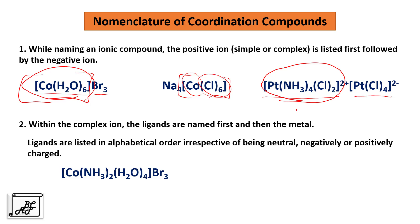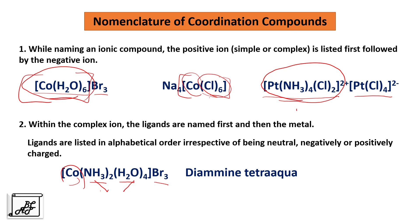For example, in this case cobalt is the central metal atom. Then we have amine as a ligand, then a water molecule — called aqua in the IUPAC naming system — and then bromide ion outside the square bracket as a negative ion. We have two ligands: amine and aqua. Alphabetically, amine comes first and then aqua. As there are two amine groups and four water molecules, we name them as diamine tetraaqua.